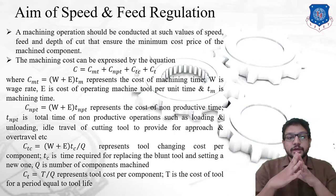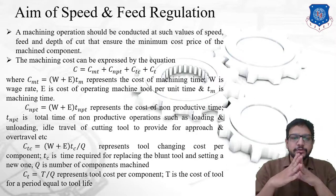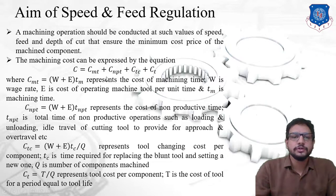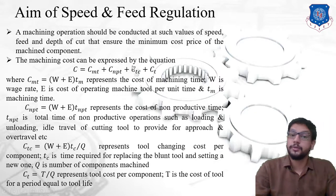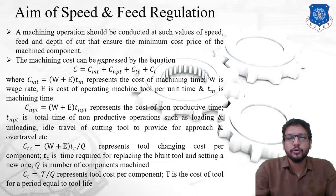There is an expression for machining cost given by the equation: C = Cmt + Cnpt + Ctc + Ct. In this equation, Cmt represents the cost of machining time, Cnpt represents the cost for non-productive time, Ctc represents tool-changing cost per component, and Ct represents tool cost per component. Let us understand how all these costs affect the total and how we can minimize them.